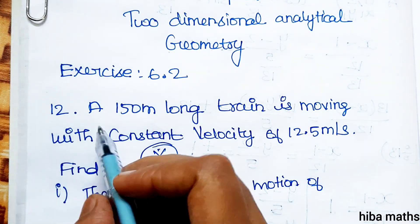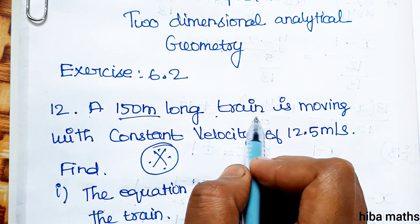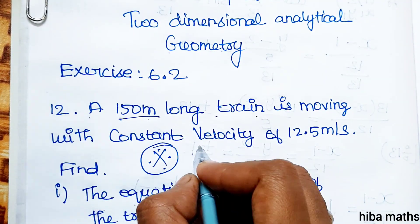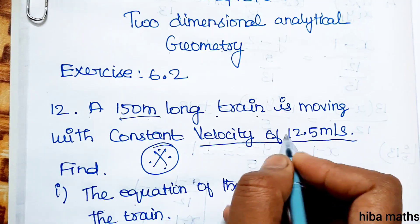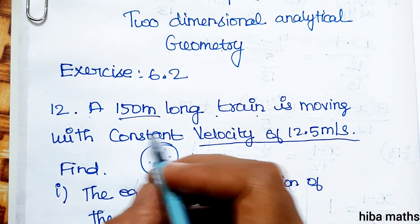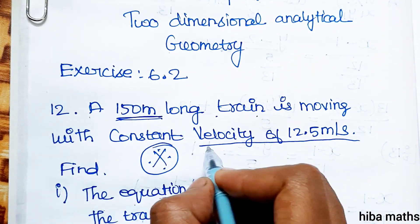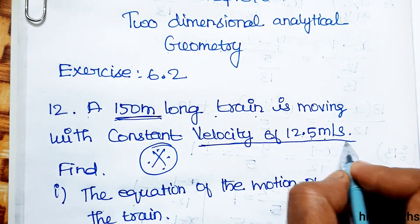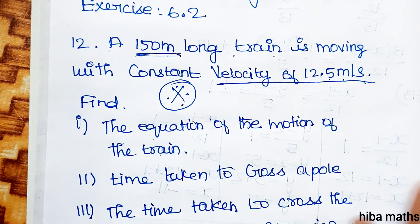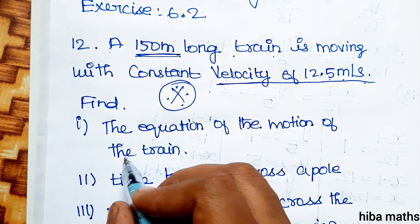12th question. A 150 meter long train is moving with a constant velocity of 12.5 meter per second. Length, velocity speed 12.5 meter per second.